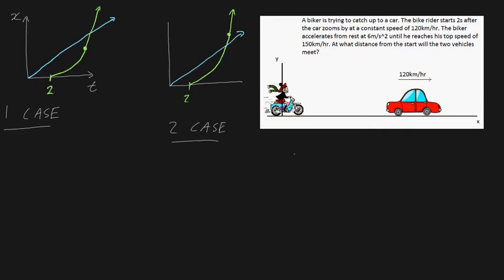In this video, instead of plotting displacement versus time, we're going to plot velocity versus time — that's a slightly smarter but maybe less intuitive approach. If we plot the velocity of the car with respect to time, from t equals zero onwards, the car has a constant speed of 120 kilometers per hour.